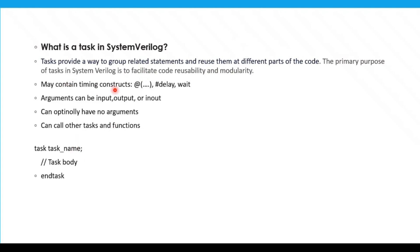Inside the task, you can use timing constructs. Arguments can be input, output, or inout. In the case of a task, it will not return any value directly — you have to use output for returning values. You can optionally have no arguments. Inside the task, you can also call other tasks and functions. This is the syntax for the task: task, task_name, task body, endtask.